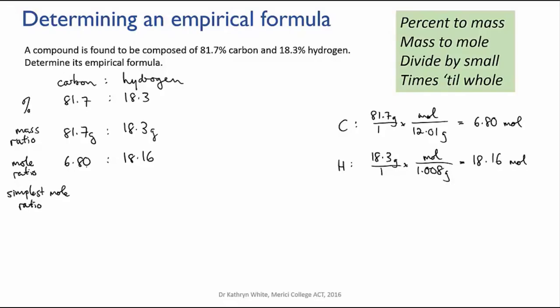How do you simplify a ratio? Well you divide by the lowest common factor. So here we're going to divide through by the smallest of the two numbers. That will give us a ratio of one to something. So we divide through by 6.80 and that simplifies the ratio to 1 to 2.67.